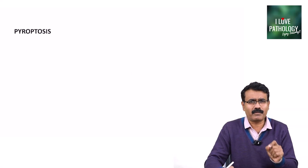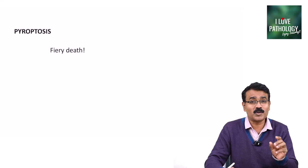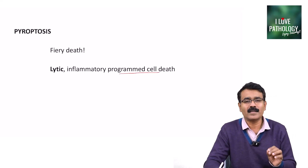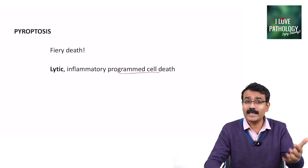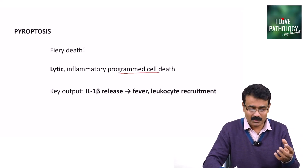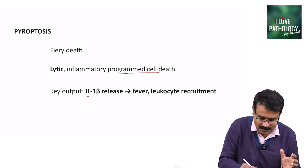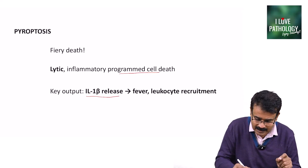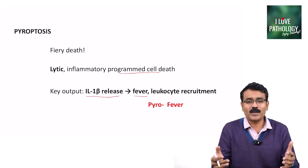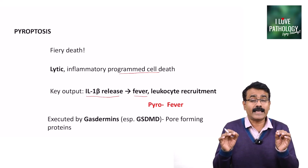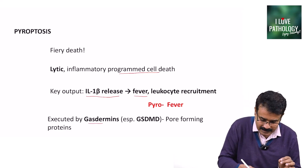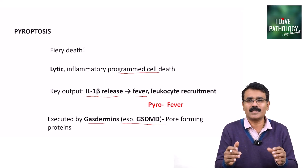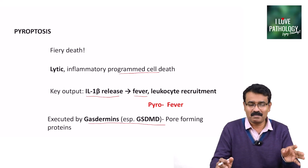So what is pyroptosis? Pyre means fire, so pyroptosis is also referred to as a fiery death, which is a lytic form of cell death, but programmed cell death — a lytic, inflammatory, yet programmed cell death. The key output of pyroptosis is release of interleukin-1-beta, an inflammatory cytokine which results in fever and leukocyte recruitment. The execution of pyroptosis is by gasdermins — GSDMD — which are pore-forming proteins.